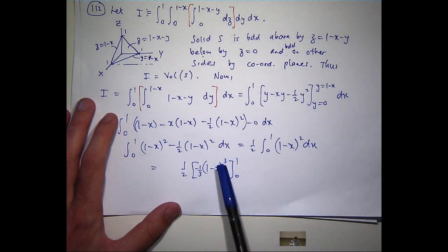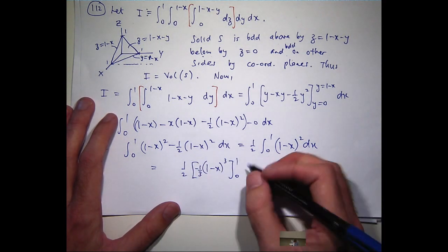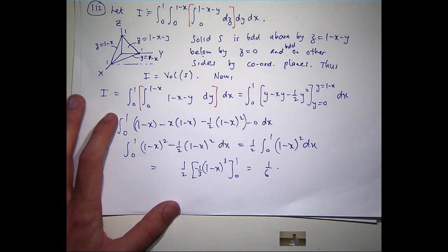So, when I sub in 1, I'm going to get 0. When I sub in 0, I'm going to get 1. And the negative sign ensures that we have a positive answer. Okay?